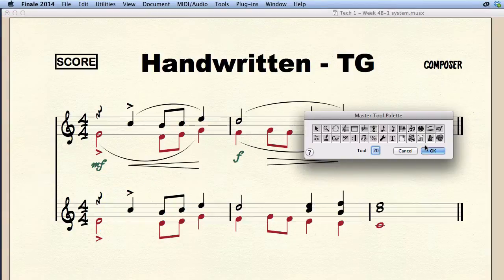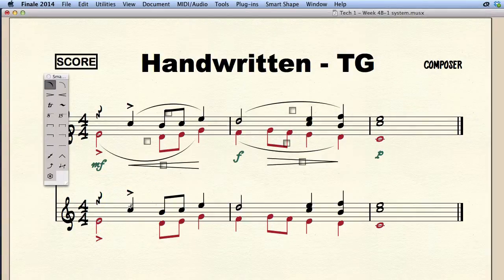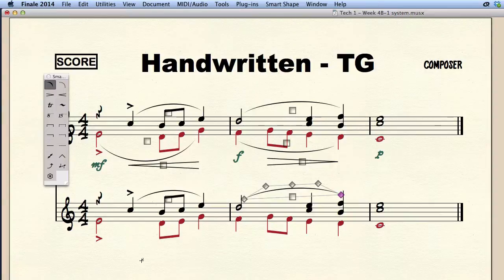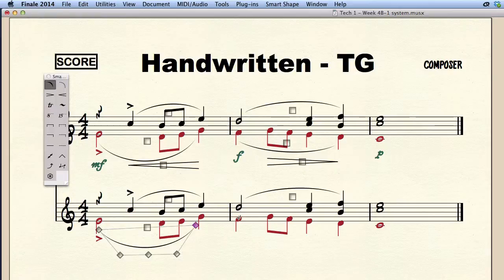To enter slurs with the smart shape tool in Finale 2014 we don't have to switch to a specific layer. Just double click the first note and drag to the note you want to end the slur at and it will automatically switch to that layer.